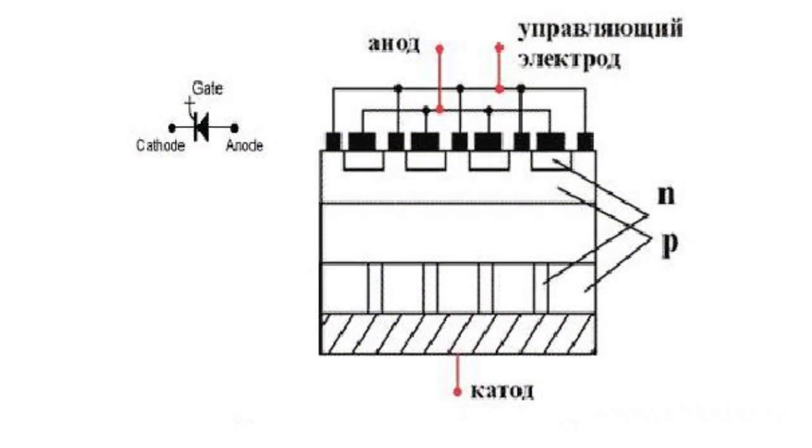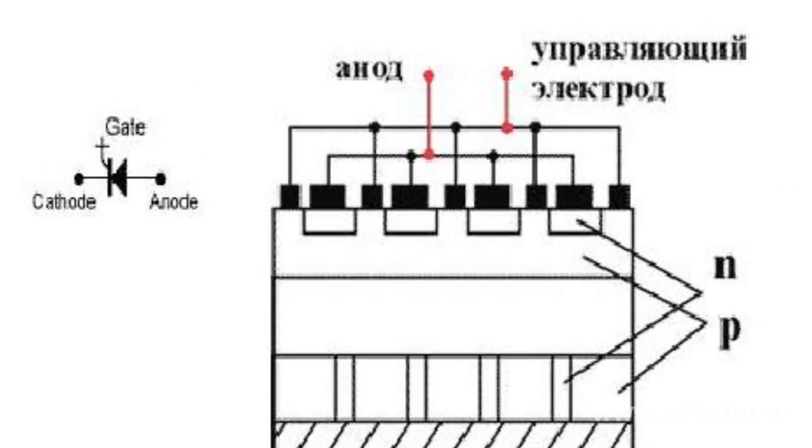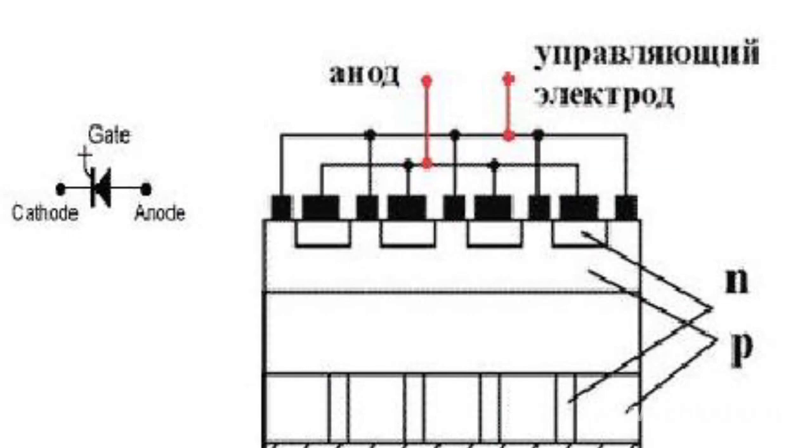The main distinguishing design feature of GTO thyristors, in contrast to normal thyristors, is a different structure of horizontal and vertical PN layers.